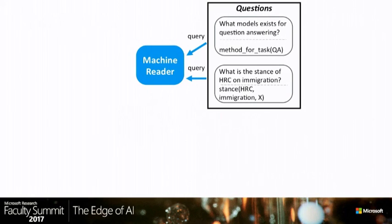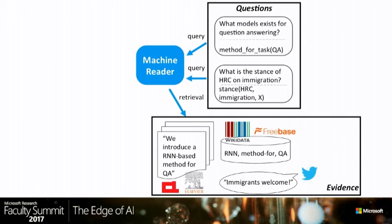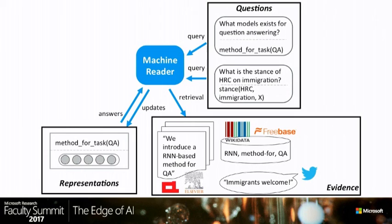The other task I'm interested in is understanding scientific publications, where we have very long documents and want to know things about what methods, tasks, and datasets they use. We might ask questions such as 'What models exist for question answering?' or verify statements like 'Method A outperforms method B for task C.' My view on an ideal machine reading scenario: we start with questions, retrieve evidence from articles, social media, or knowledge bases, and the machine reading model learns to represent questions and evidence to return the correct answer.